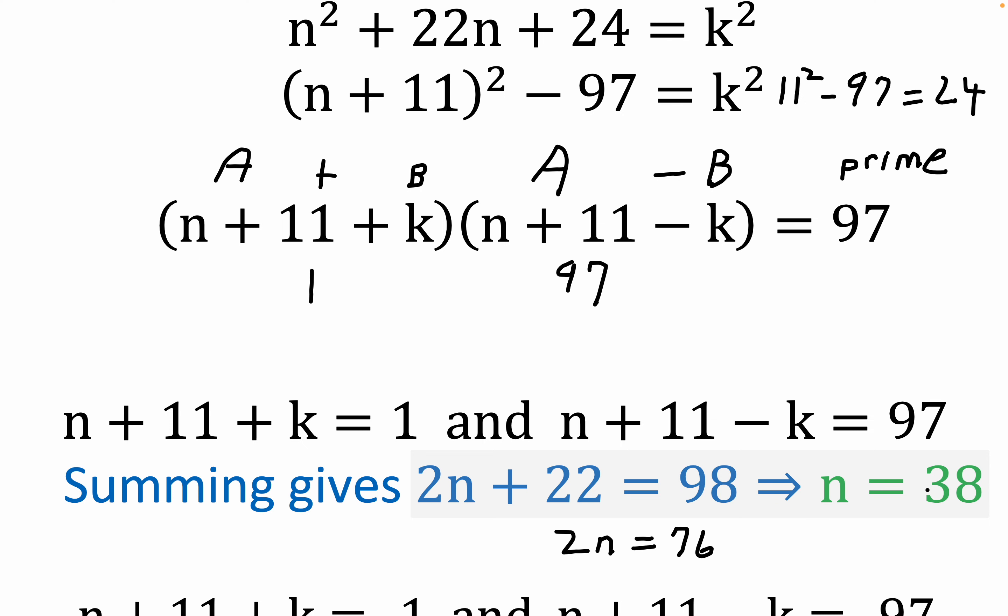And that way you can see where the n came from. 76 divided by 2 is n equals 38. So that's one of the answers. Notice that, and you can check this, 38 plus 11 is 49, so that would imply that K equals minus 48. You don't necessarily have to solve for K, but if you want to prove this really works, K would be minus 48.